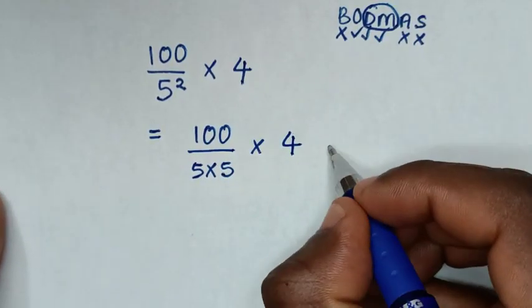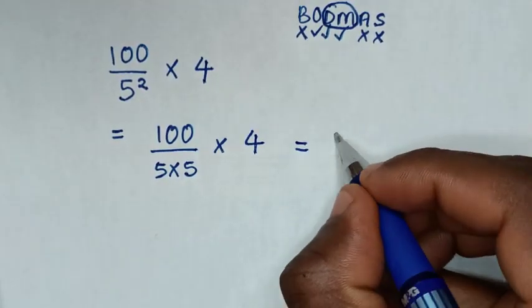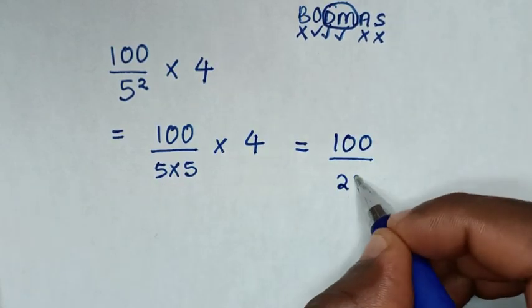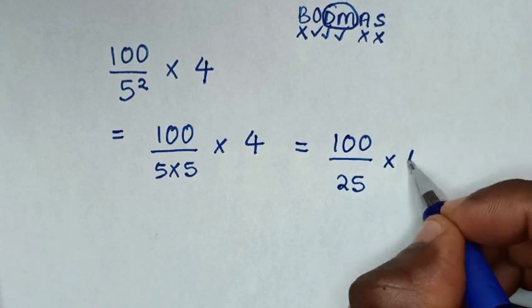Then in next step, it will be equal to 100 over 5 times 5 is 25, then times 4.